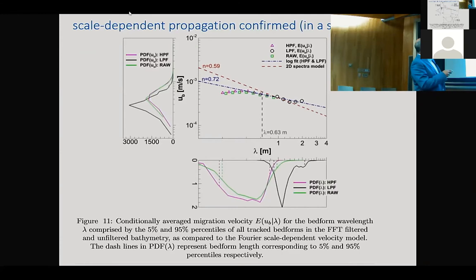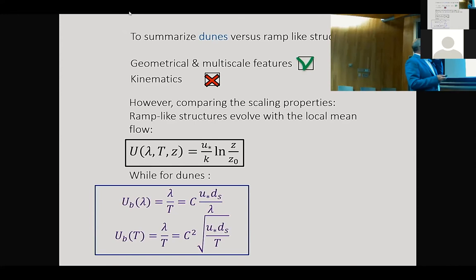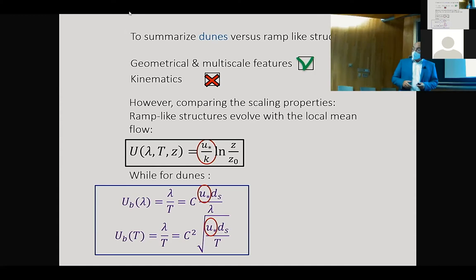Compiling all this, plotting bedform velocity as a function of wavelength, we confirm scale-dependent convection velocity — not from spectral analysis alone but as a true characteristic of bedforms, at least across the range of small and large bedforms measured. Geometrically the features are consistent; kinematics differs — ramp-like turbulent structures move with the local mean velocity following the log law, while dunes move with a scale-dependent velocity — but both share the shear velocity as the relevant velocity scale.